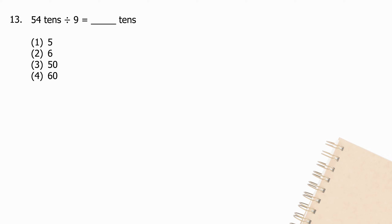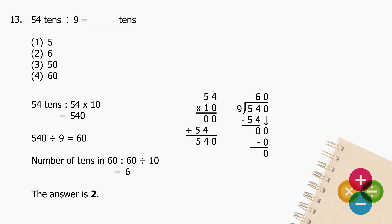Question 13: 54 tens divided by 9 equals missing number tens. 54 tens: multiply 54 by 10 and the product is 540. Divide 540 by 9 and the quotient is 60. The number of tens in 60: divide 60 by 10 and the quotient is 6. The answer is 2.